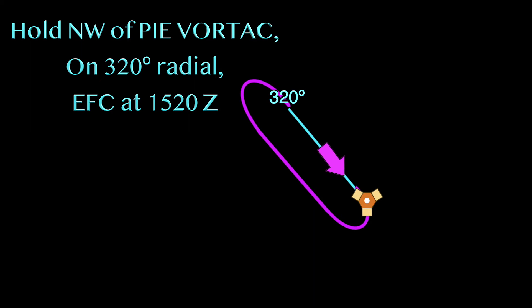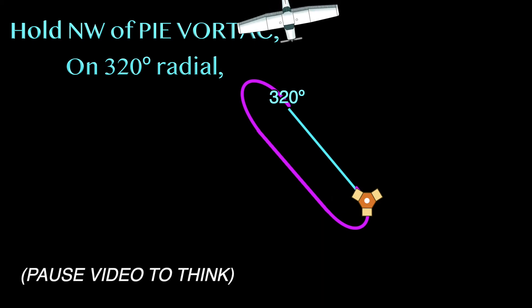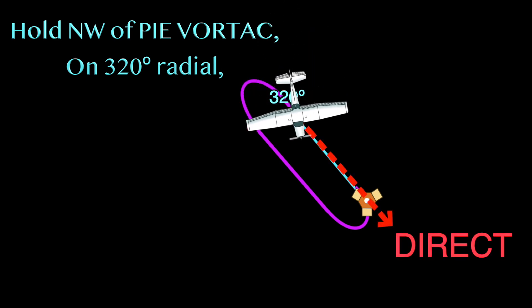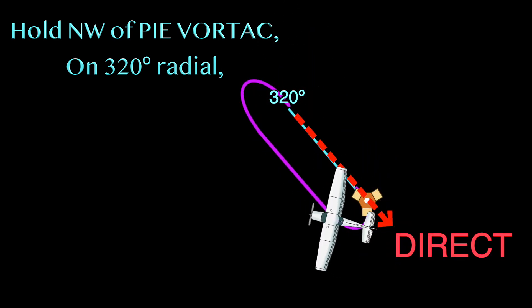Regarding the last piece of information from this ATC clearance, the EFC time, this is also important information but not very relevant in this topic of selecting correct holding entries. So in this case, our holding pattern is cycling in this direction. Say we were heading towards the hold from here, we can again consider which of the initial segments of each entry would require the least amount of turning. So from here, we can see how the direct entry would make most sense.